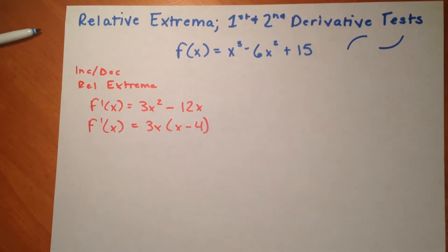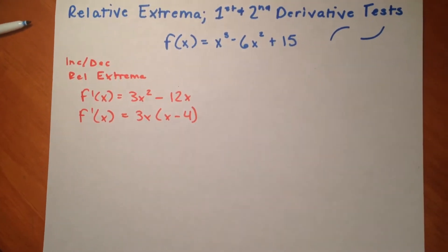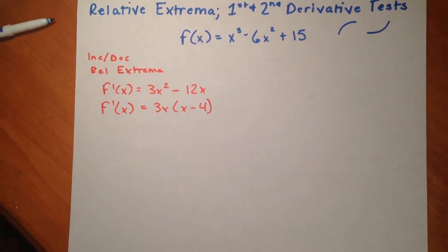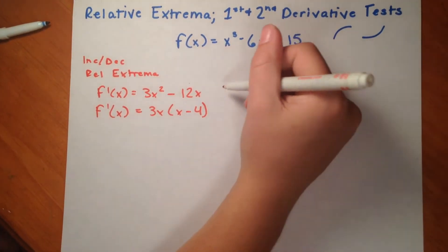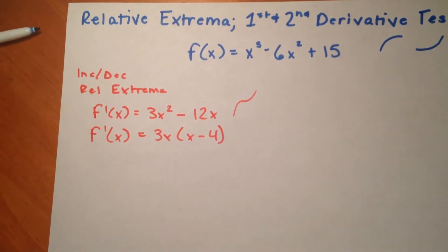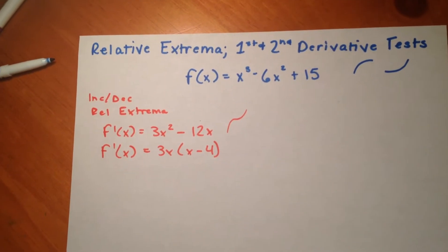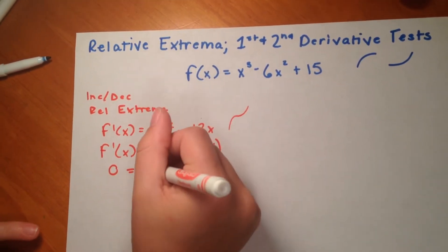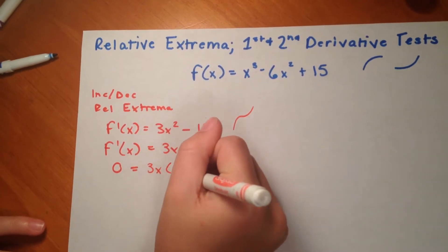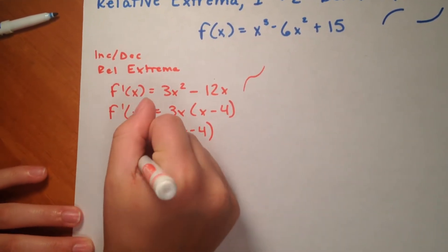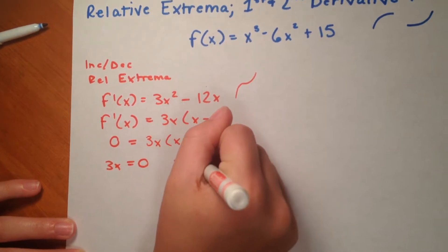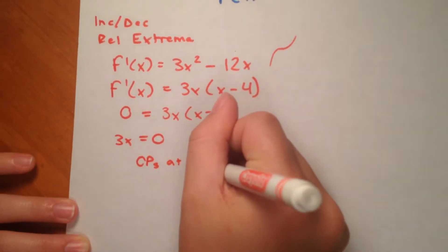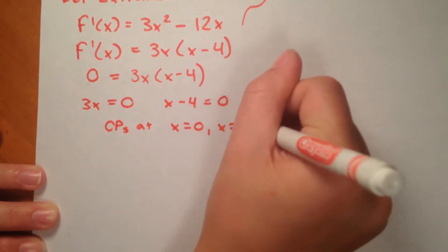So now we're going to get our critical points. Our critical points are the points at which the function does something interesting — whether it changes from increasing to decreasing, or goes from positive to positive, or increasing to increasing. To do that, we set f prime x equal to 0, and we set each portion equal to 0. So our critical points, or CPs, are at x equals 0 and x equals 4.